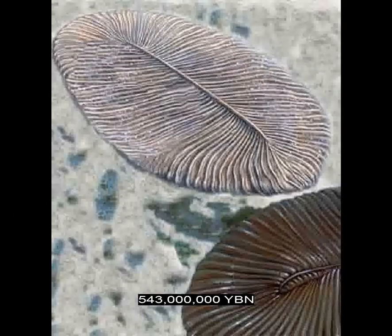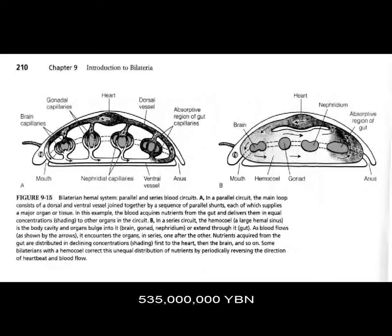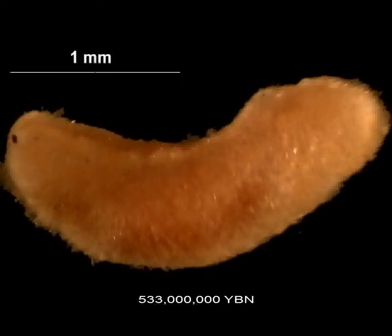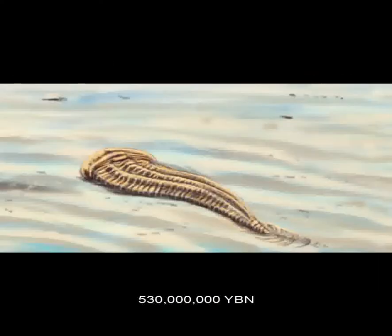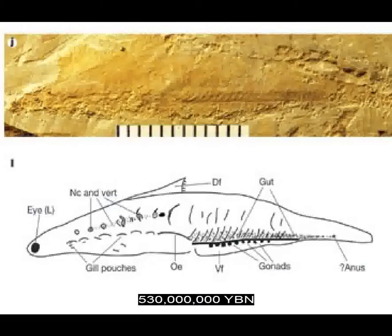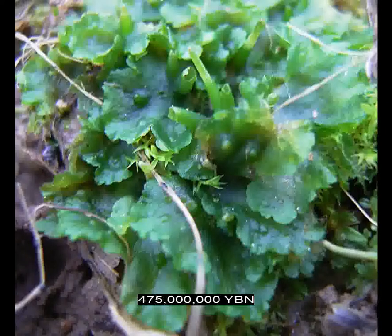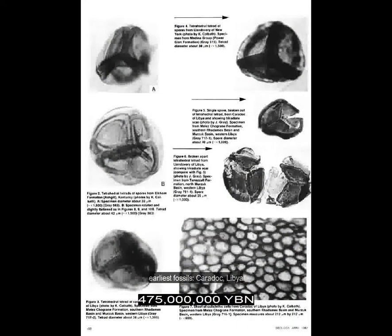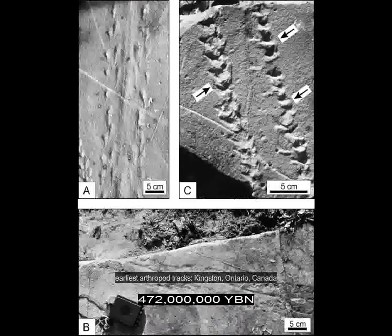First fish. Segmentation. Heart. Mollusks. Arthropods. Crustaceans. Insects. Vertebrates — ancestor of most fish and all amphibians, reptiles, mammals and birds. Non-vascular plants. Liverworts. Mosses. Plants live on land. Animals live on land.